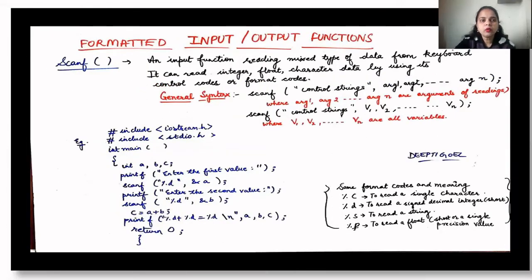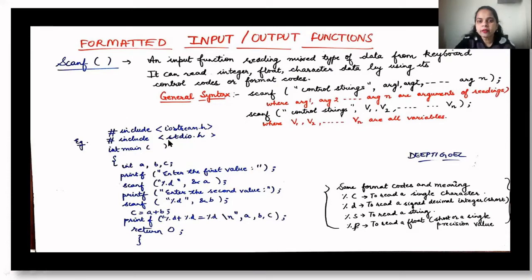Now let us discuss about the formatted input output functions. Scanf is used for the input function — it reads mixed type data from the keyboard. It can read integer values, real or floating values, or character data using certain control codes. The general syntax for scanf is: scanf("control strings", argument1, argument2, ...) followed by a semicolon indicating the end of the statement.